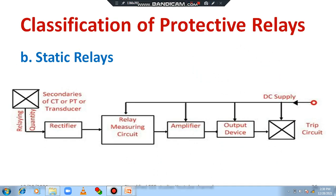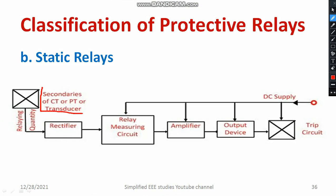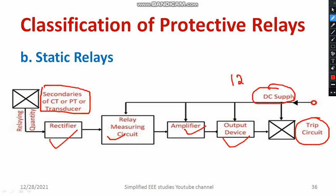Regarding the static relay: we need electronic components. We use a CT for measurement of current and PT for measurement of voltage. The relaying quantity — which is a varying quantity — is converted into a fixed quantity by using a rectifier, an electronic interface. The fixed signal is then fed to a relay measuring unit, which identifies the fixed quantity of signal and amplifies it. Afterwards it is connected to the output device and finally to the trip circuit. The relay measuring unit, amplifier, and output device all operate under DC supply only — a 12 or 24 volt DC supply is required.